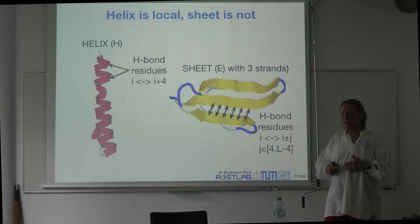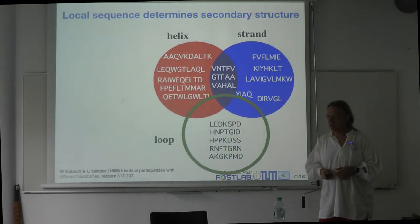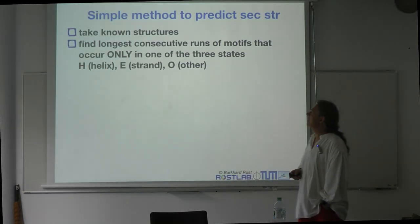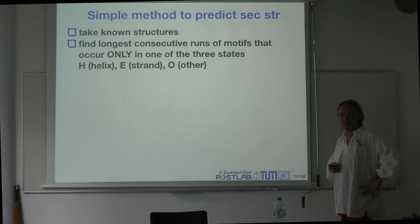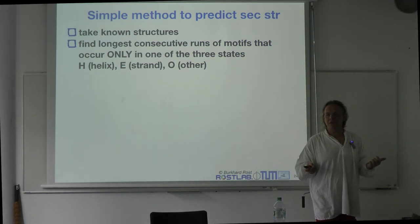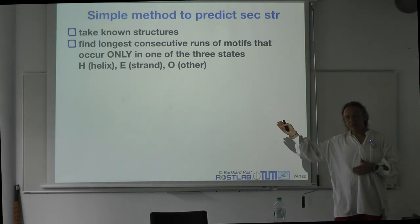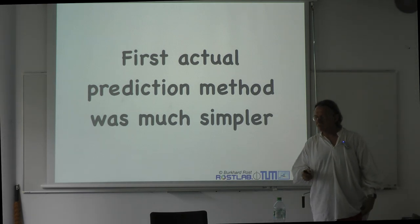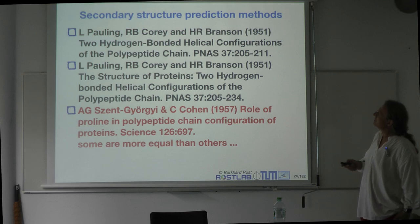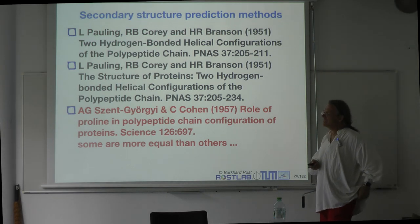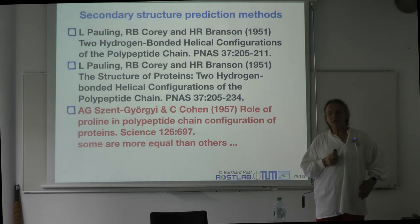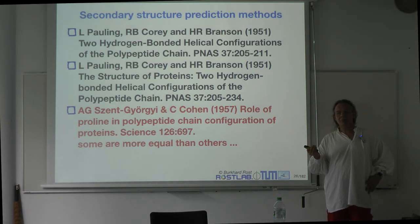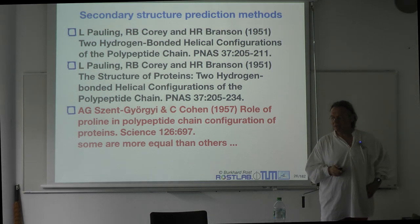Depending on how the environment looks, a pentapeptide would be either in the beta strand or in the alpha helix. The simplest solution for secondary structure prediction is to take known structures, find the longest consecutive runs of motifs occurring in one of the three states. The first method was even simpler — it goes back to secondary structure being postulated in PNAS, which led to the idea that proline breaks a helix. Wherever you see a proline, before was a helix and afterwards there is not. That was the first secondary structure prediction method, published in Science, predating the first structures.